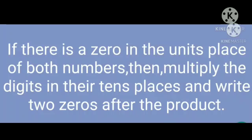And if there is a zero in the units place of both numbers, then multiply the digits in their tens places and write two zeros after the product.